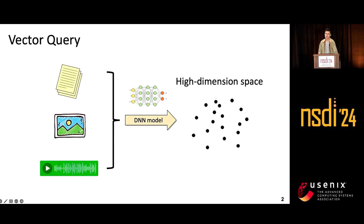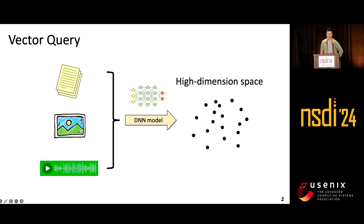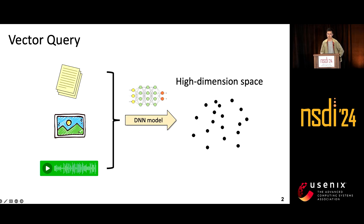Vector query uses machine learning to translate the similarity of text, image, or audio into a high-dimensional vector space and processes pairwise distance evaluation to find the nearest neighbor vectors for a query vector. With the growth trend of big data, the scale of the vector database exceeds billions, so our system focuses on the billion-scale database.